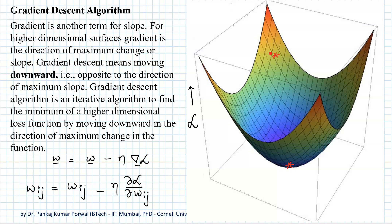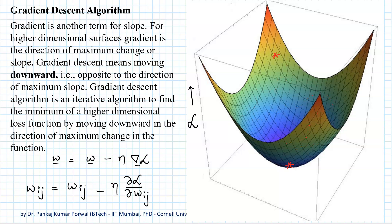Our objective is to change the values of weights and biases to move from the initial high-loss point to the minimum point. There are several paths to do this: for example, spiraling down like a well of death, or a zigzag path that may or may not reach the bottom. Most intuitively, we can move along the path of maximum slope and reach the desired minimum in the smallest time and covering the smallest distance.